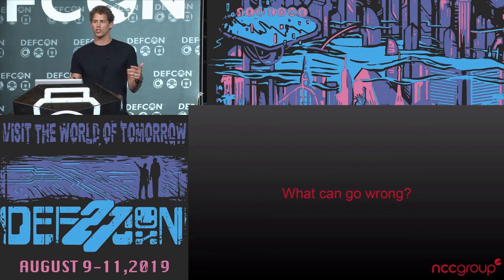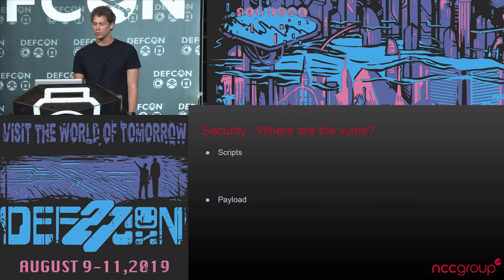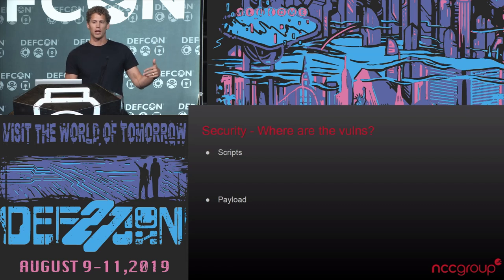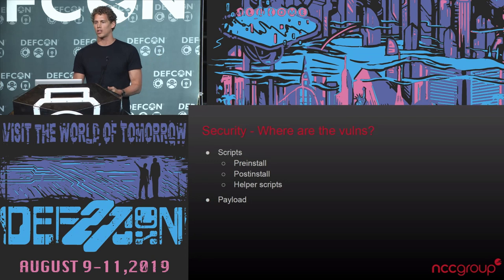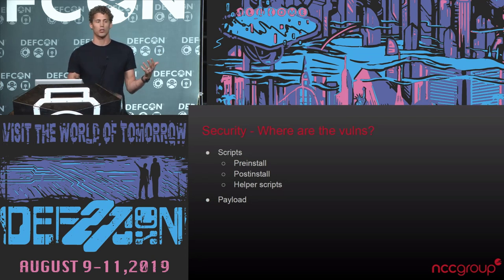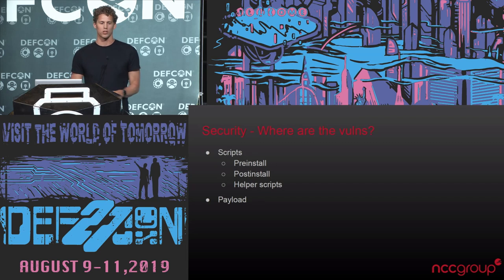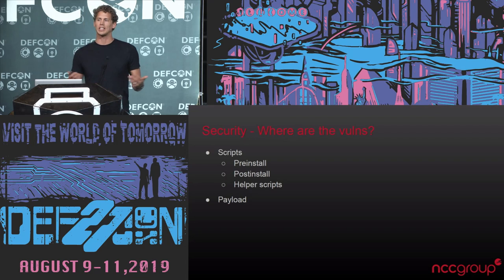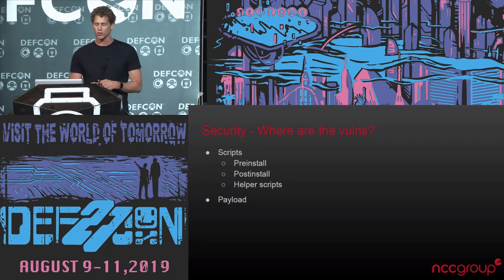Now we're going to get into the security concerns that can happen during installation. You have the scripts and the payload, which is where most of this is happening. In the scripts, you're going to look at the pre-installation and the post-installation. These can also include helper scripts and other files, so you'll want to look at what's going on there. They're plain text — bash, Python, Perl — pretty easy to audit and understand what's going on and look for common mistakes.